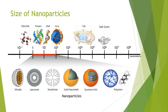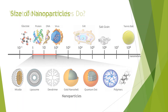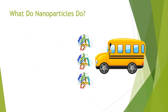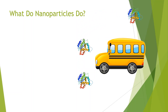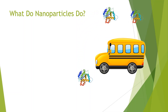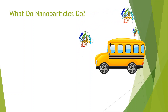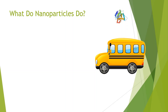A grain of salt is 10,000 times bigger, and a tennis ball is 1 million times bigger than a nanoparticle. Nanoparticles act as vehicles to transport drugs. In this case, a nanoparticle is like a bus, and the proteins are like passengers in the bus.